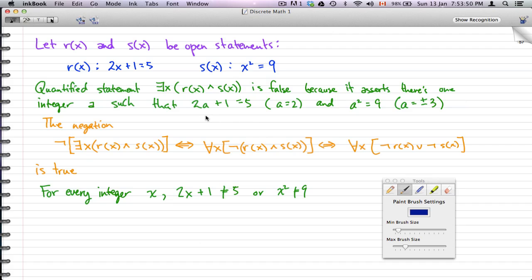The only way we can get 2x + 1 = 5 is when x = 2, and to get x² = 9 only works if we have x = ±3. So there exists an x that will give us both 2x + 1 = 5 and x² = 9 - we know right away that this statement is false. I think we already did this in one of my past videos.